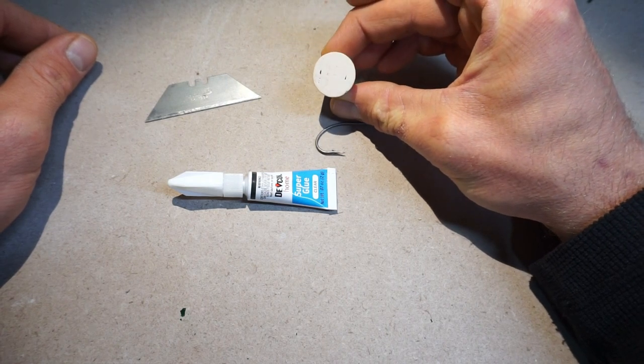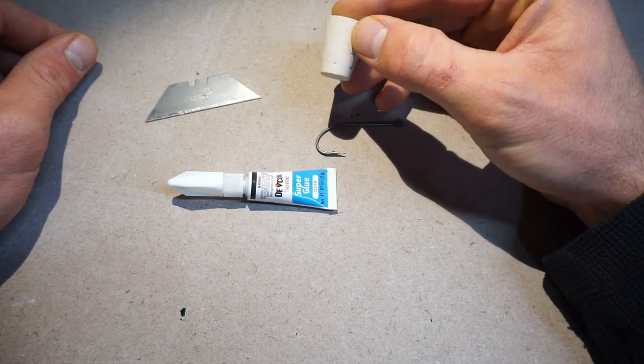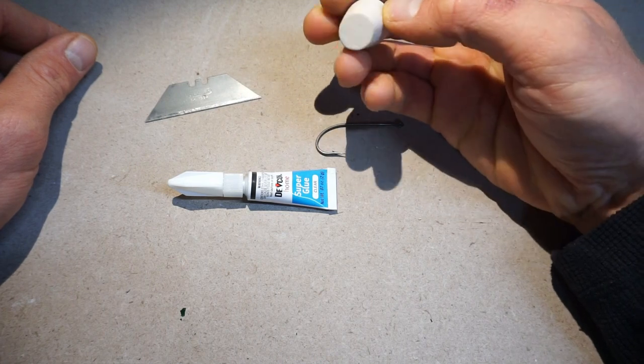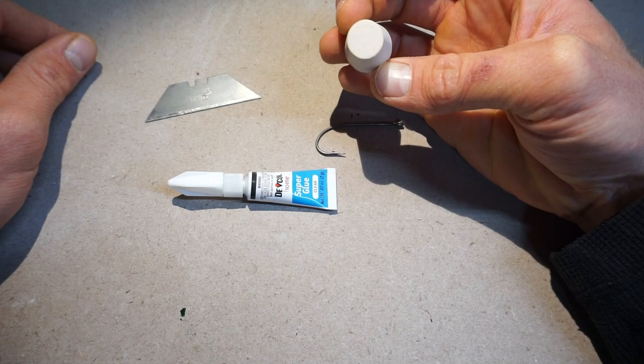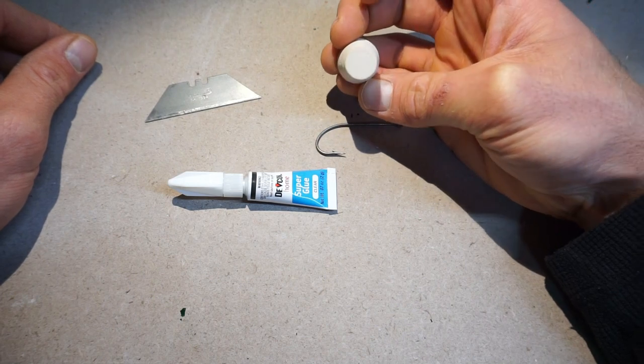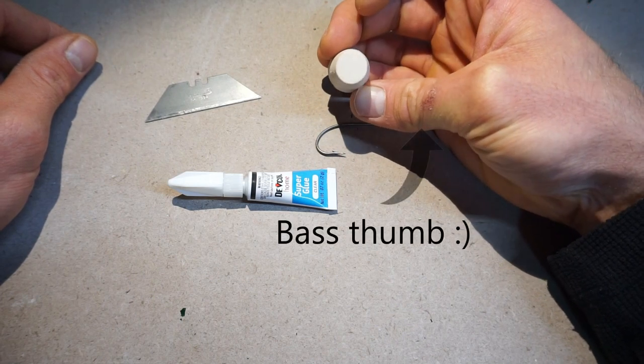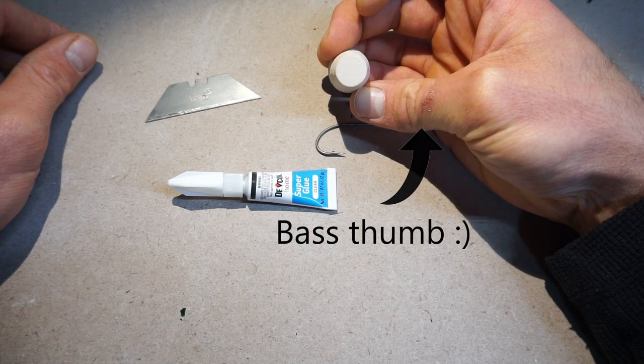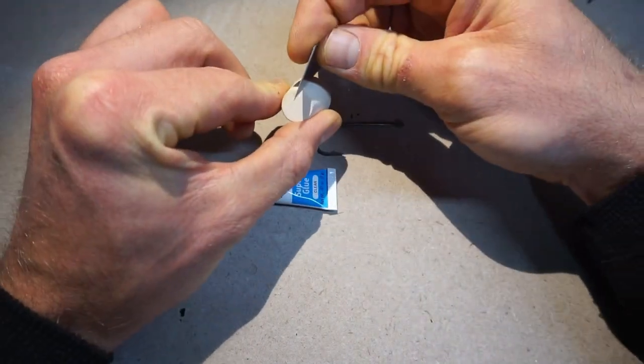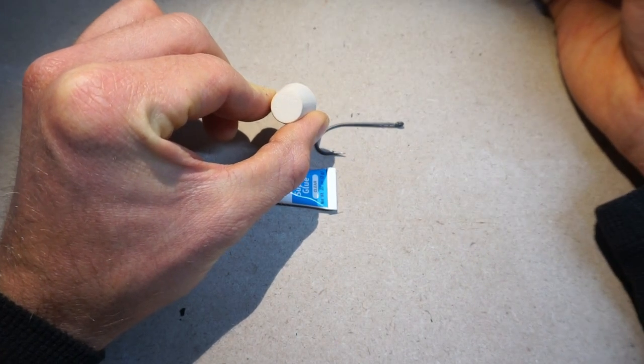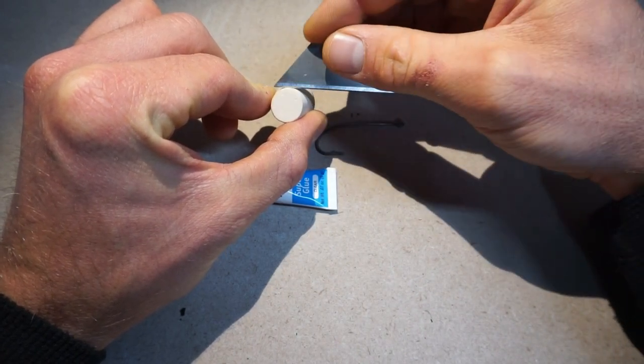The first tip I have for you is that all these corks have a grain to them. It's hard to see in the camera without a macro lens, but they all have a way that the grain goes. You want to cut along that grain when you cut the channel for the hook because it prevents the popper from falling apart.